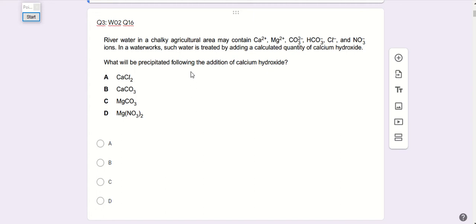So they are asking, which one of the following is the precipitate? You see, when you added calcium hydroxide, that means you are increasing the concentration of calcium ion in the solution.